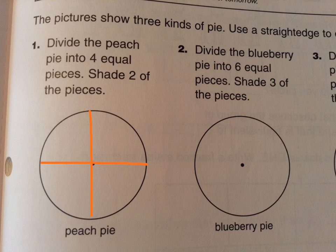And I need to shade two of the pieces. So there it is. And the next one says blueberry pie into six equal pieces. That might be a little bit more challenging than four. You may have to erase a couple of times to get it right so that the pieces are equal.